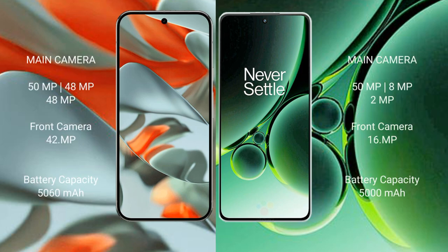Google Pixel 9 Pro XL features a rear triple camera setup of 50MP plus 48MP plus 48MP, and a front camera of 42MP. OnePlus Nord 3 features a rear triple camera setup of 50MP plus 8MP plus 2MP, and a front camera of 16MP.